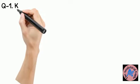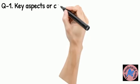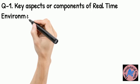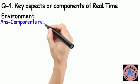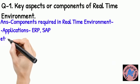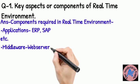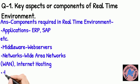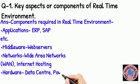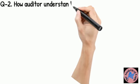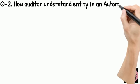Question 1: Key aspects or components of a real-time environment. In a real-time environment, you have a mobile application, then a network connecting you — such as WiFi — and then middleware, and finally a banking server which accepts your request and processes your payment. So there are four components of a real-time environment.